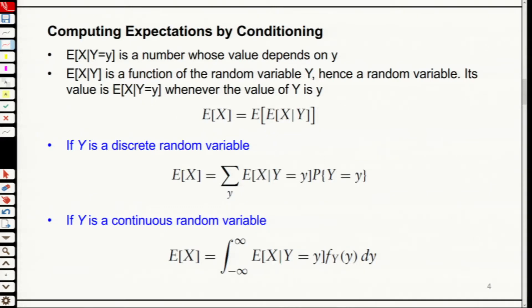But if you don't fix y, this becomes a function of y, because depending on what y you give me, I will get a different expectation of X given Y. So this is a random variable. And if you take the expectation of this random variable — the expectation of E[X|Y] — it will become E[X]. Y will be marginalized out.